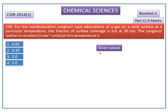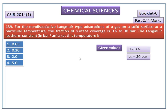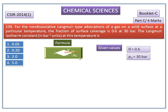The given values are: fraction of surface coverage, theta, is equal to 0.6, and pressure Pa is equal to 30 bar. The Langmuir adsorption isotherm equation is: theta equals k times Pa divided by 1 plus k times Pa.